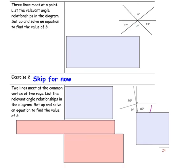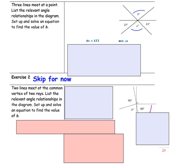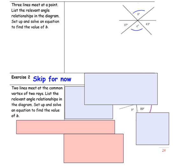Example 2: Three lines meet at a point. List the relevant angle relationships in the diagram and set up and solve an equation to find the value of b. I see that b and c are vertical angles and therefore they are congruent. I also see that on this line I have three angles that will add up to 180 degrees. Vertical angles create congruent angle measurements, so angle b is equal to angle c. The first thing I want to do is let angle b equal angle c.